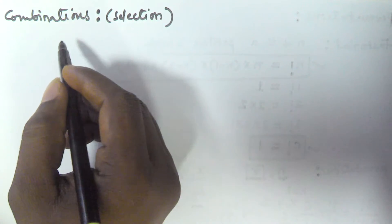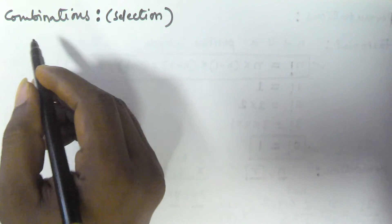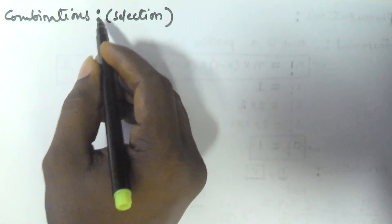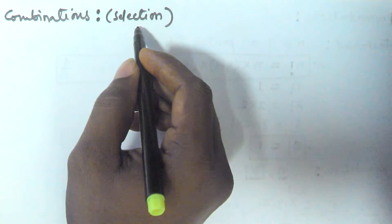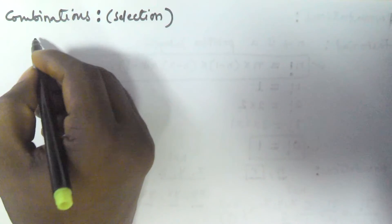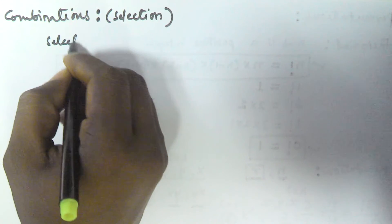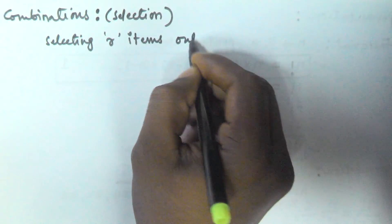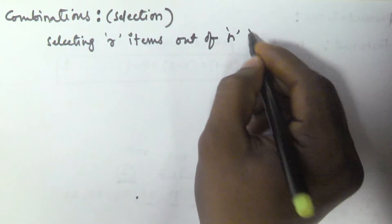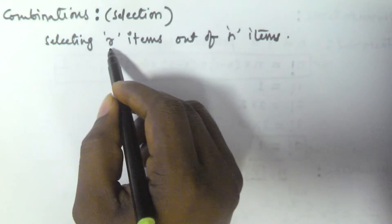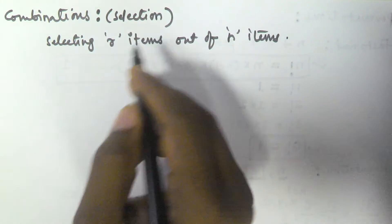Hello friends. In this video we will see what is combinations. In the previous video we have seen what is permutation. Combination is sometimes also called selection. Combination is all about selecting r items out of n items.